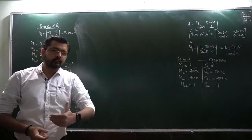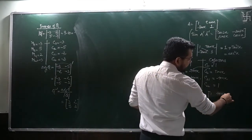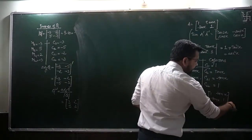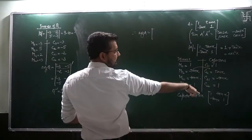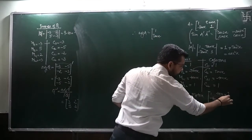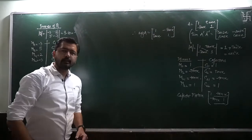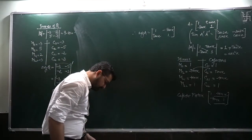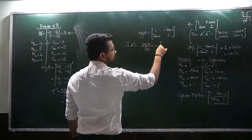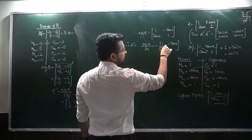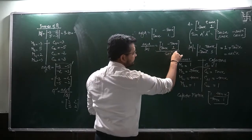Co-factor matrix is [1, tan(x); -tan(x), 1]. Now adjoint of A: taking transpose of the co-factor matrix. The rows become columns, giving adjoint = [1, -tan(x); tan(x), 1]. Once we have the adjoint, A inverse = adjoint of A divided by determinant = [1, -tan(x); tan(x), 1] divided by sec²(x). Substituting tan(x) = sin(x)/cos(x), multiplying through gives: [cos²(x), -sin(x)cos(x); sin(x)cos(x), cos²(x)].